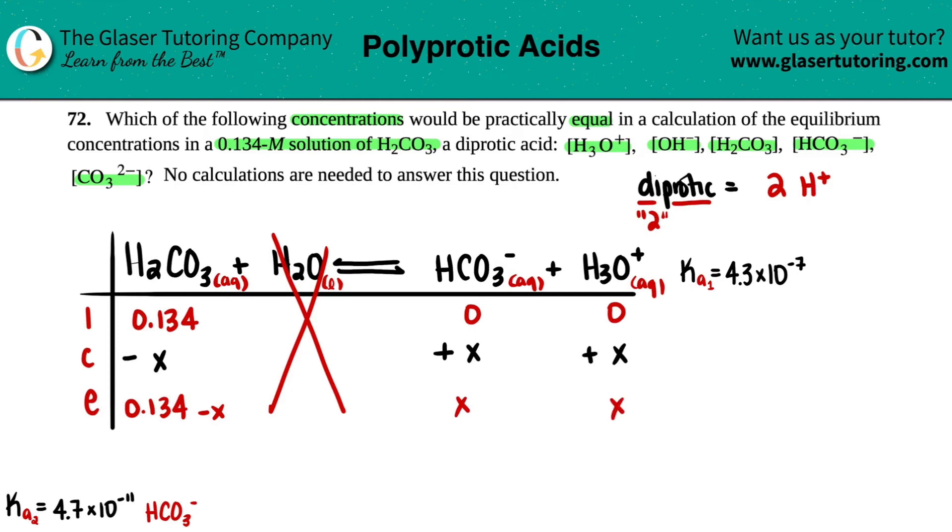So we can kind of see which ones would be equal. At equilibrium, you have 0.134 minus X. But then if we actually did the math, we have two values that would just be X. So which one of these would be equal, the HCO3 minus and the H3O plus.